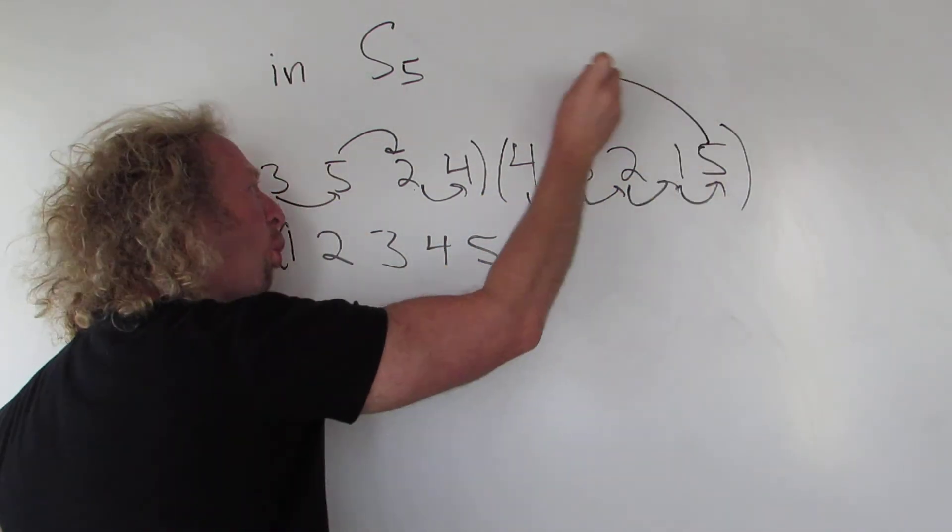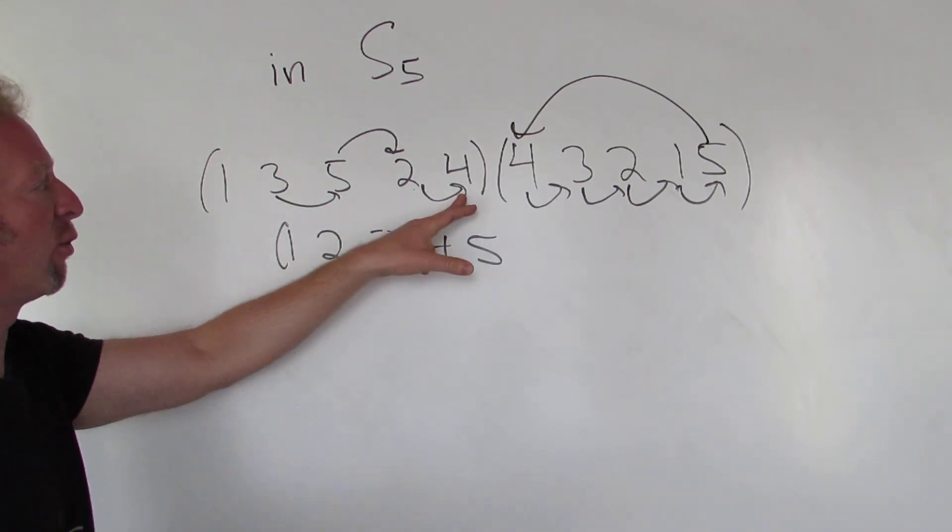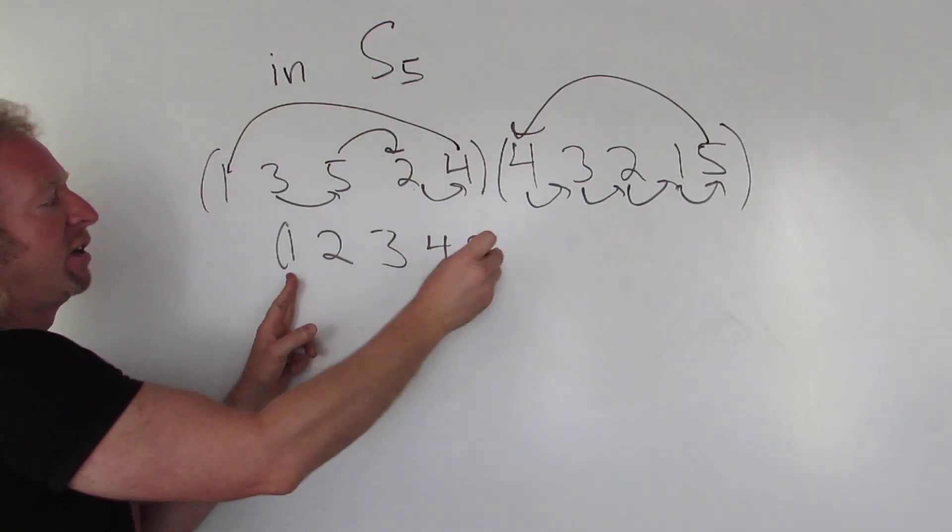5 goes to 4. You look over here. Well 4 goes to 1, and 1's over here, so you close it.